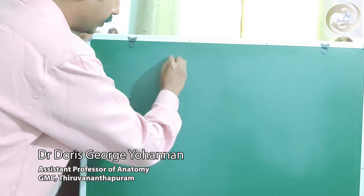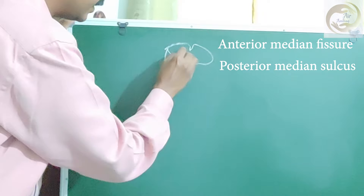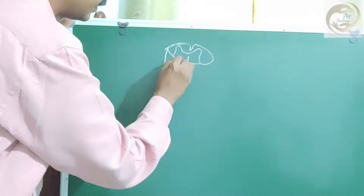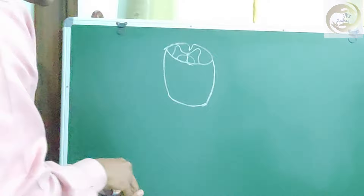Now we are going to learn about the spinal cord. This is a section of the spinal cord — the anterior aspect with the anterior median fissure, and the posterior aspect with the posterior median sulcus. Here you can see the H-shaped grey matter and the central canal. This is a cut surface, a cut piece of the cylindrical spinal cord.